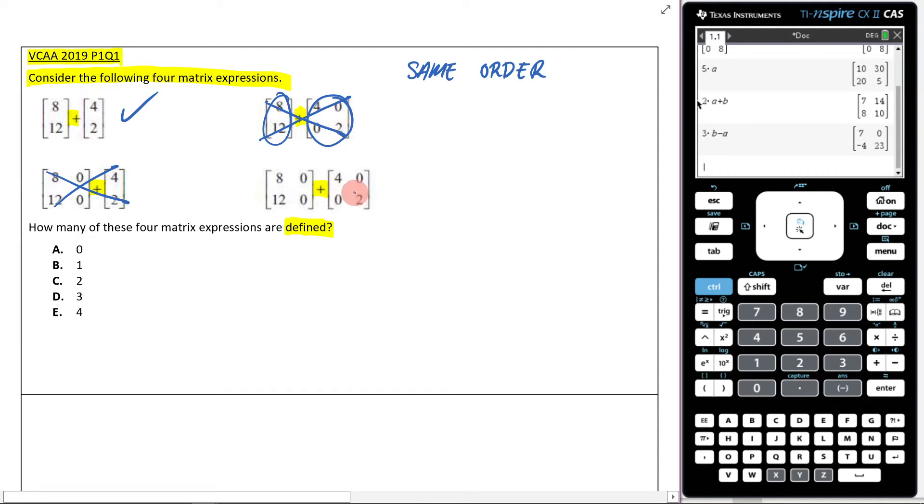But this one, you got a two by two by a two by two. That works. So that means two of them work. How many of these four matrix expressions are defined? Two of them. My answer is C.